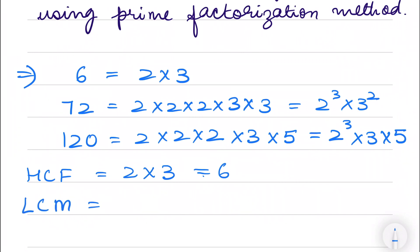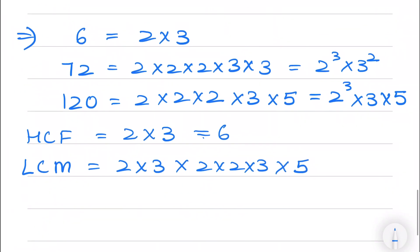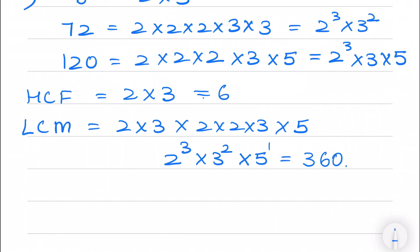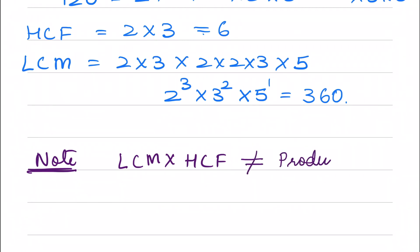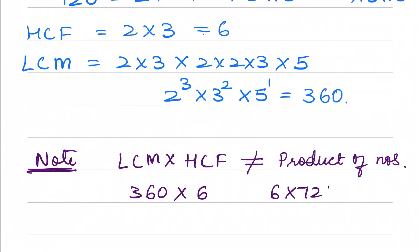The highest common factor here is 2 into 3, which equals 6, since 2 and 3 are common factors in all three numbers. For the LCM, we take the highest powers: 2 raised to the power 3, 3 raised to the power 2, and 5. So the LCM equals 8 into 9 into 5, which equals 360. We can note that LCM into HCF of these three numbers is not equal to the product of the numbers.